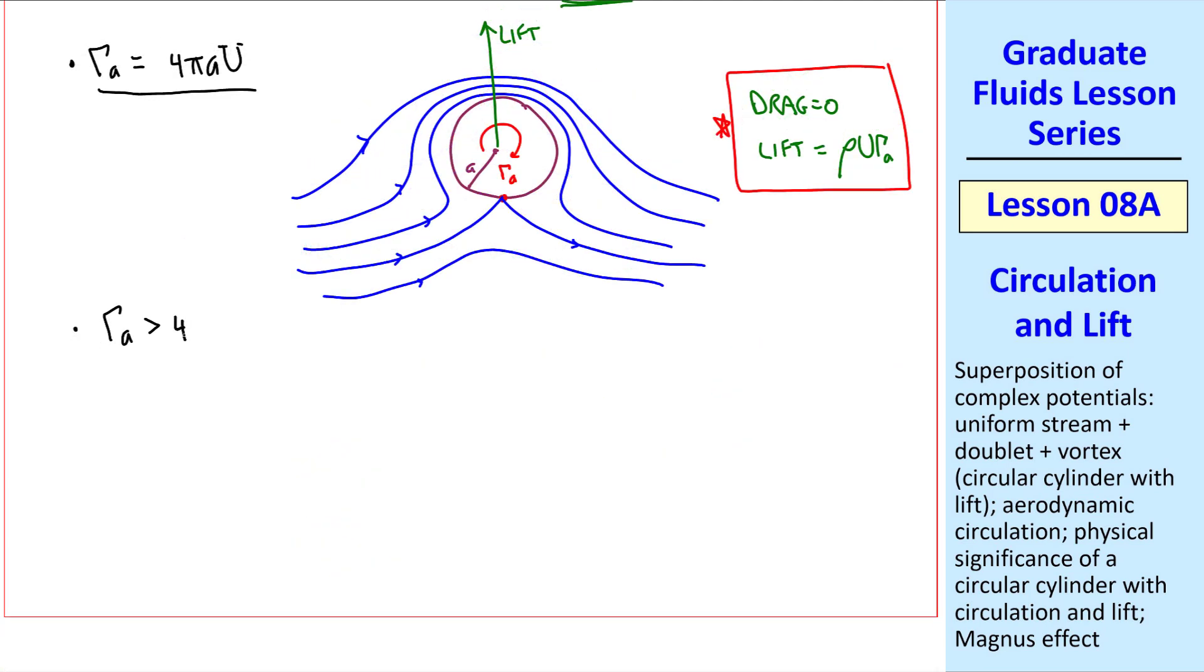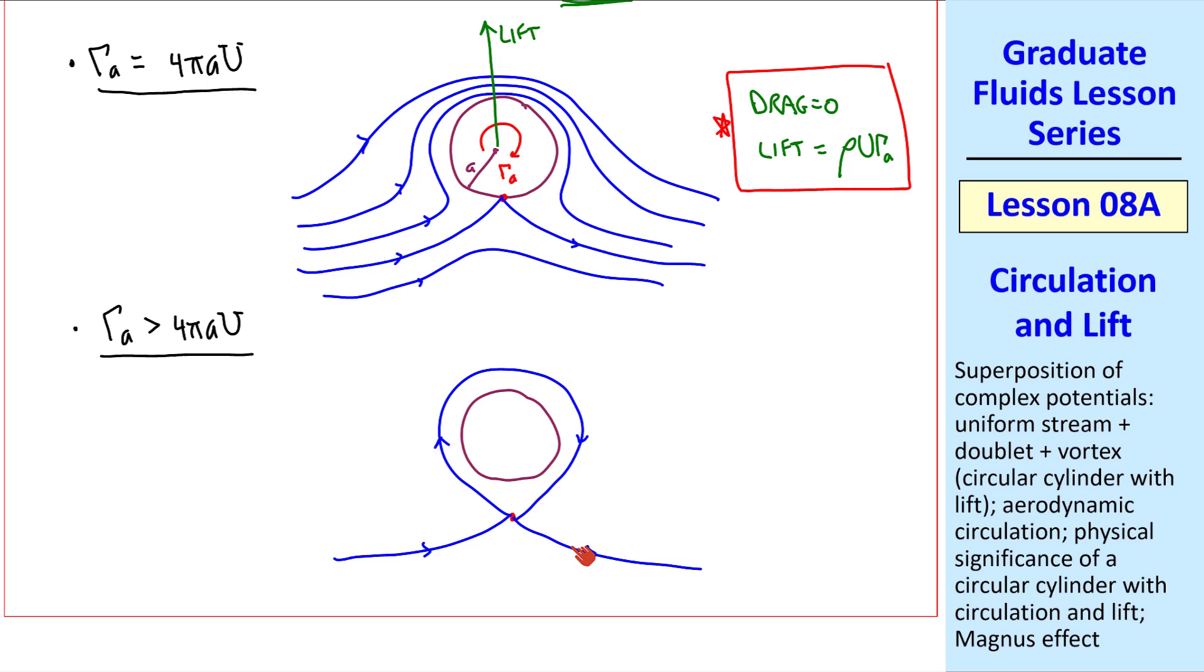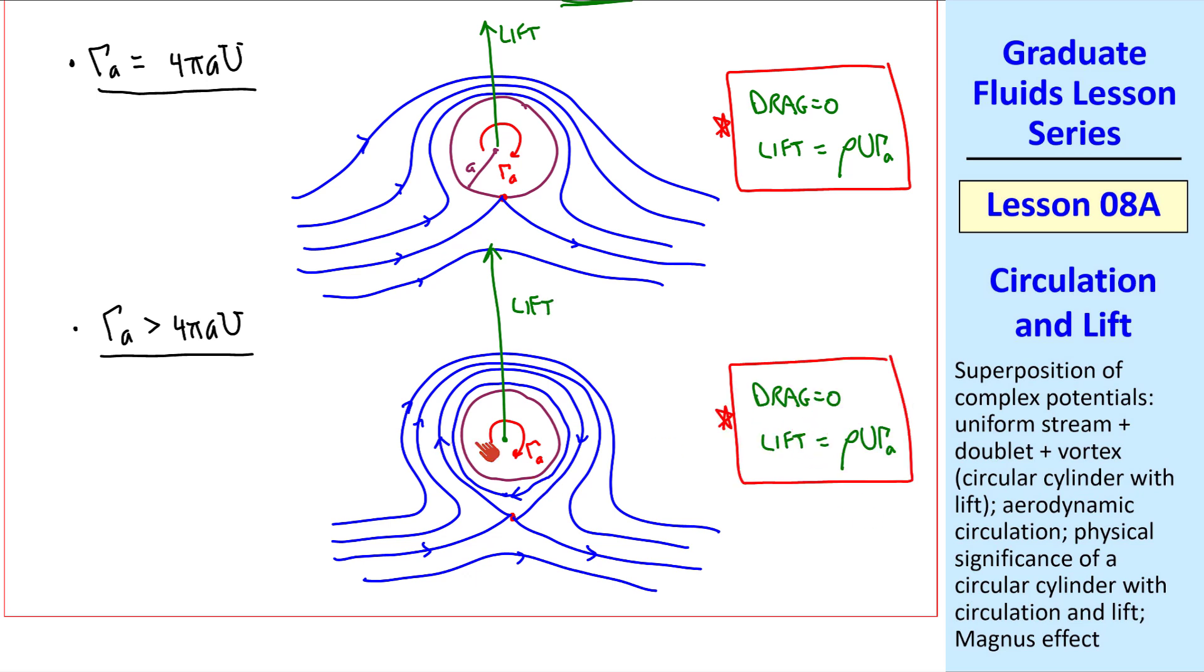Let's keep going and consider the case where gamma A is greater than four pi AU. Well, the stagnation points can't move any lower on the body, so they have to move down into the flow. It turns out that there's still only one stagnation point, and it's directly below the body. The streamlines get a little strange looking. Two streamlines come into the stagnation point, and two go away from it. And there will be some streamlines within this closed streamline that intersects the stagnation point. And the rest of them look something like this, at the top and the bottom. Again, by Bernoulli, pressure here is much lower than the pressure here, since the speed is higher here than here. So this case generates a much larger lift. But it turns out that the drag is still zero, because it's symmetric from left to right. But the lift is still rho U gamma A.